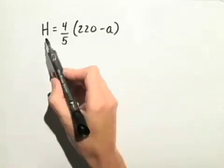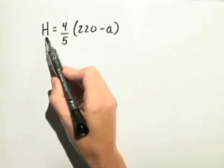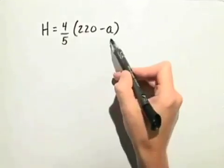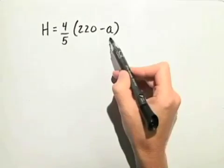So, in our formula, we have the H here, which represents the heart rate in beats per minute, and we have A, which represents the age of the person that we're looking at.